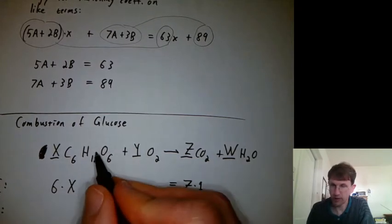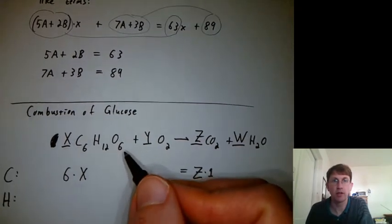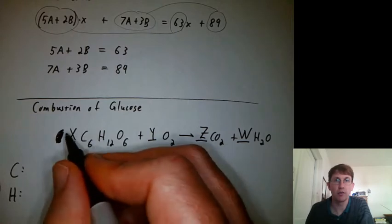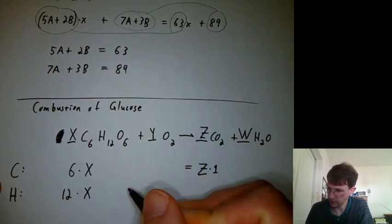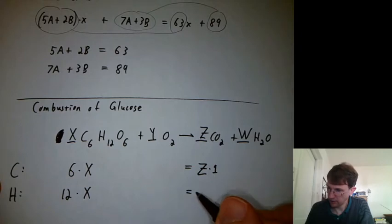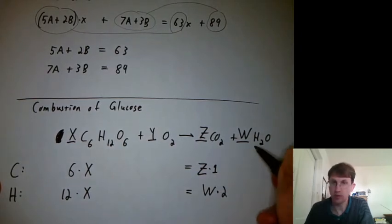How about the hydrogen equation? How many hydrogens do I have on this side? I have 12 times X. And none there. And then how many hydrogens do I have on this side? I have W times two.